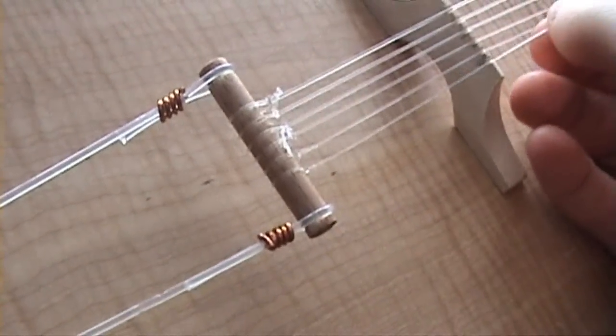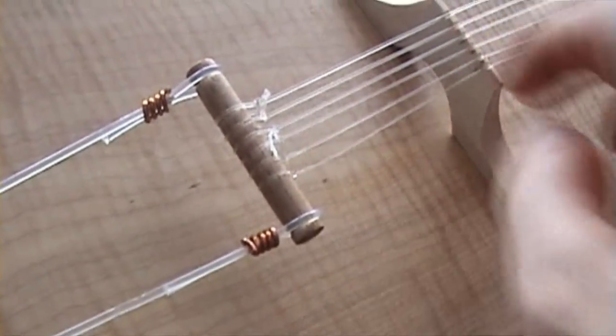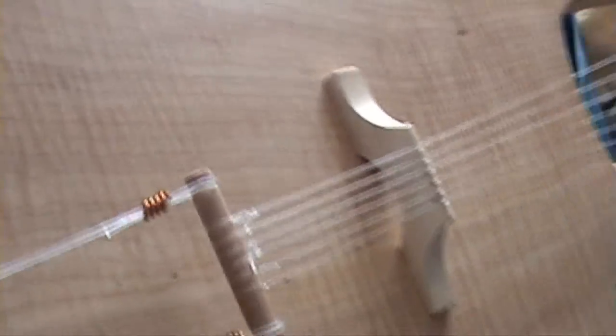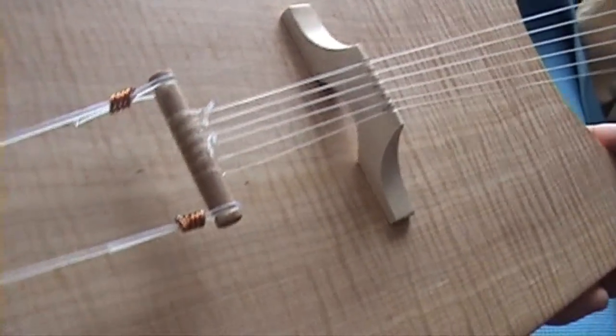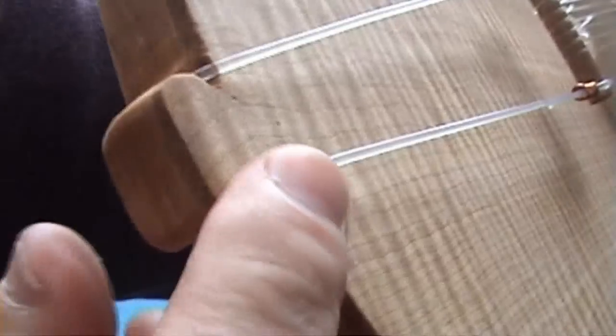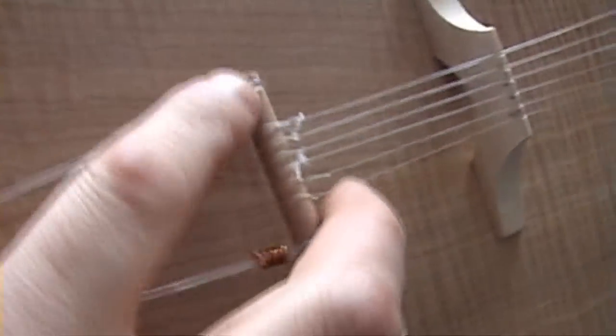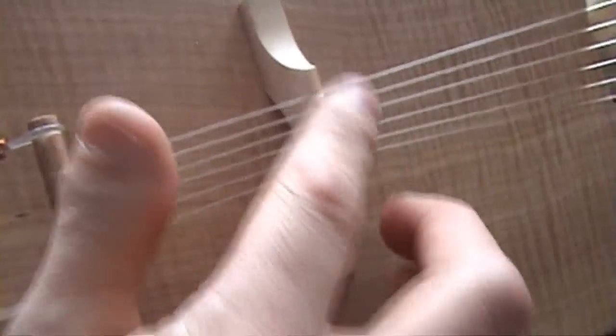We just make sure every string rides on its own string groove. So we have the tailpiece under tension. Just make sure it's tidied up there, so that it's over the groove, in the groove that we made. Equalized here, and every groove neatly here.